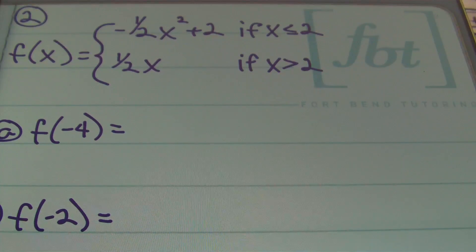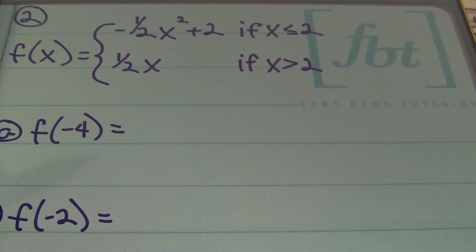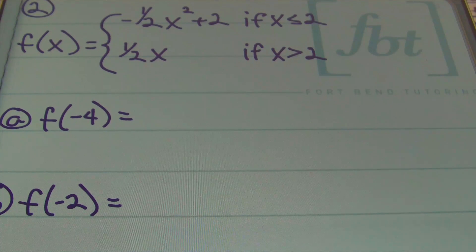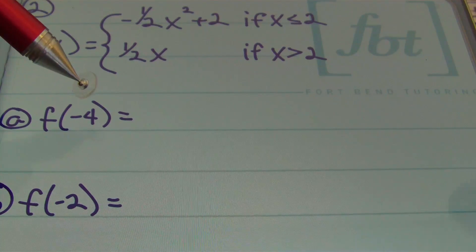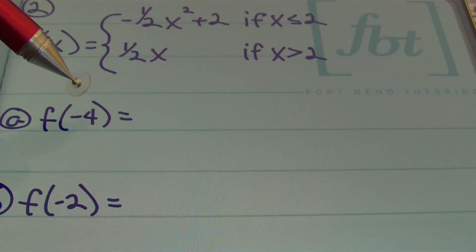Problem number two: f of x equals negative one half x squared plus two when x is less than or equal to two, and f of x equals one half x when x is greater than two. In part a, we want the y value when x equals negative four.